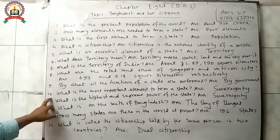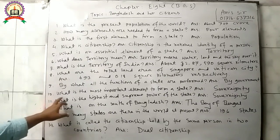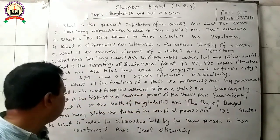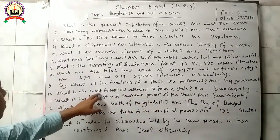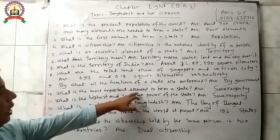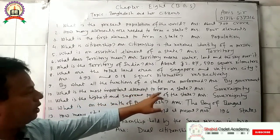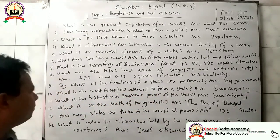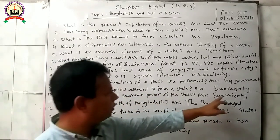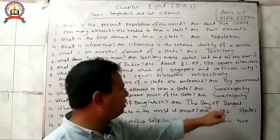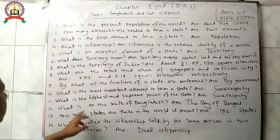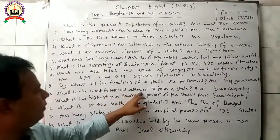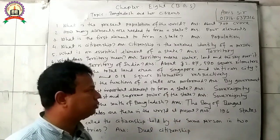Question 10: What is the most important element to form a state? Answer: Sovereignty is the most important element to form a state.